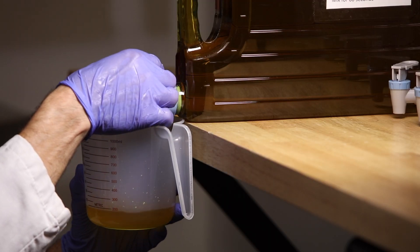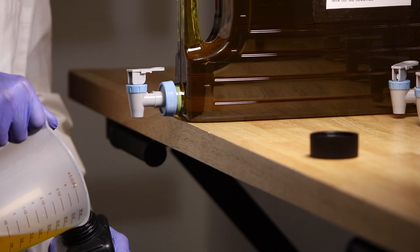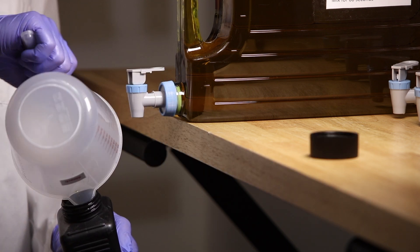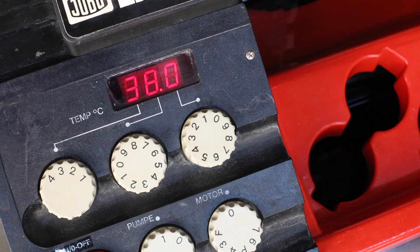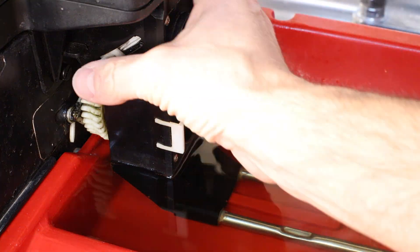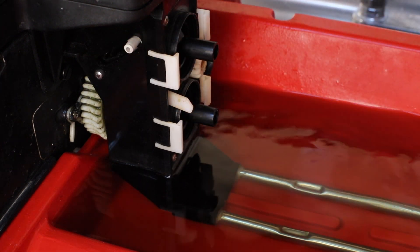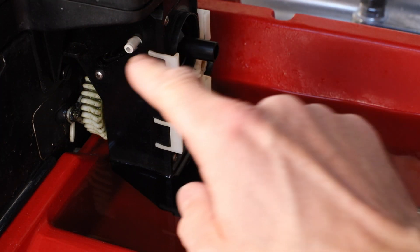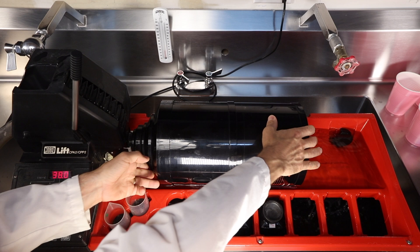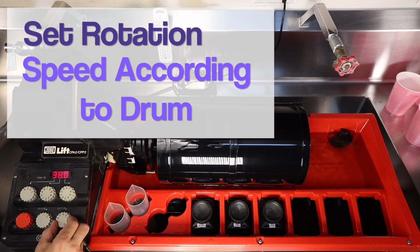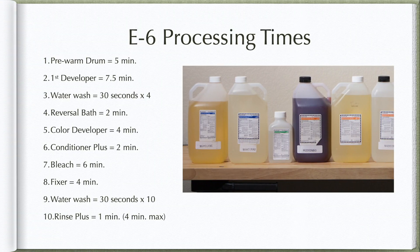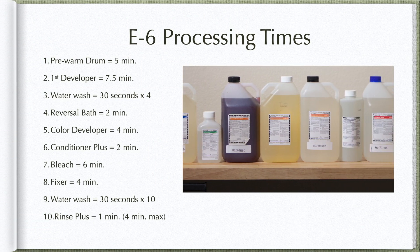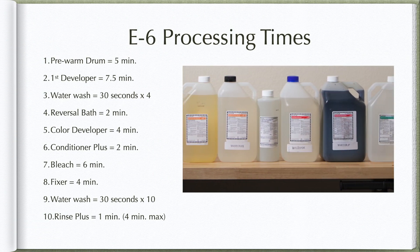Precisely measure the amount of chemistry you'll need based on the drum you're using and pour into the Jobo bottles. Place the Jobo bottles into the water bath and allow ample time for the chemistry to reach 38 degrees Celsius. Be sure to change the lever on the Jobo lift to the corresponding tank size you'll be using — down is for smaller tanks, up is for expert drums. After loading film into the tank, allow the drum to warm up on the processor for five minutes. Pre-warm the drum with no liquid for five minutes.